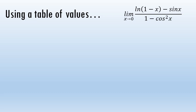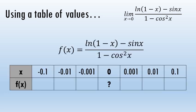Another way to evaluate a limit is through the use of a table of values. This means we're going to plug in numbers for x that get closer and closer to 0, approaching 0 from below and from above.